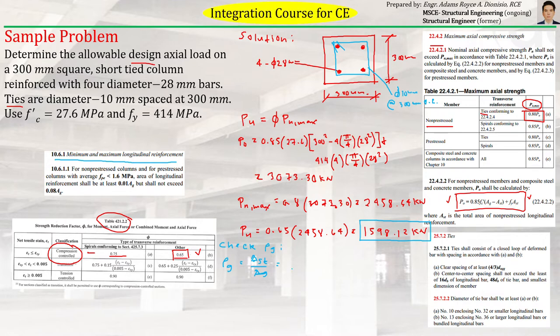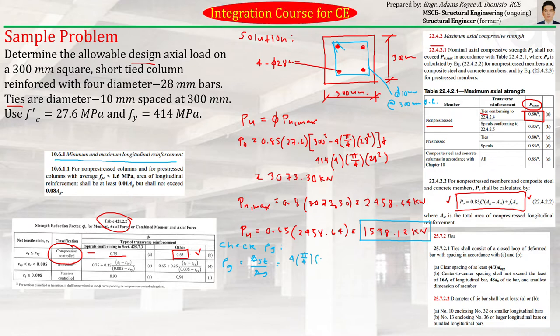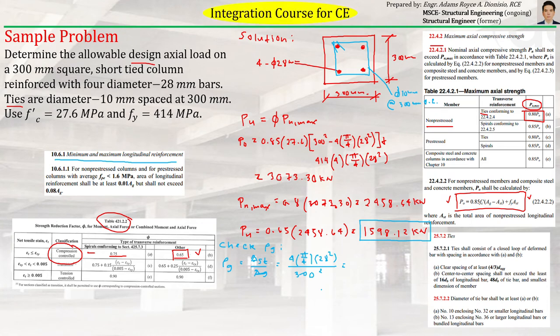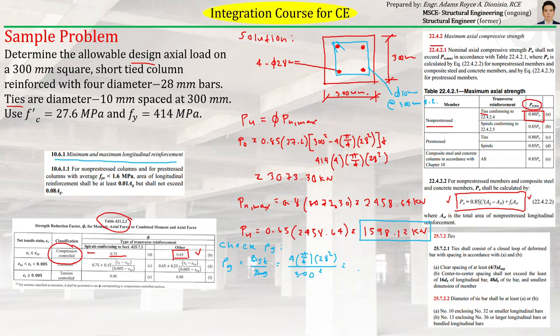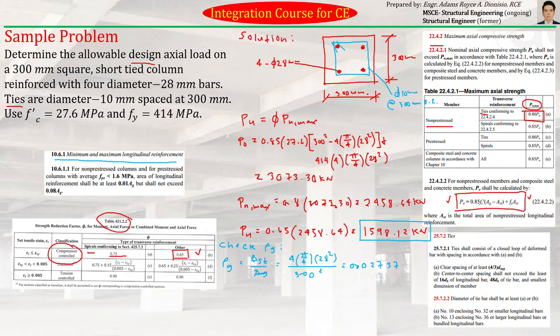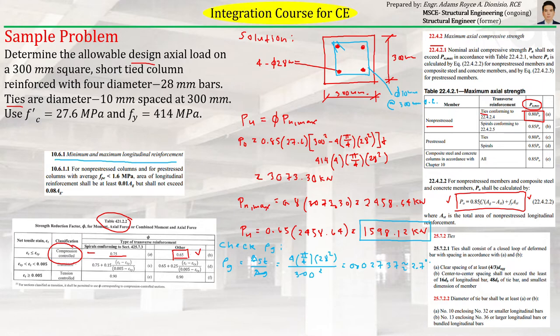If we will try to check row G, row G is just equal to AST divided by AG. So our AST is 4 times pi over 4 times 28 squared divided by AG of 300 squared. So that will be equal to 4 times pi over 4 times 28 squared divided by 300 squared. So that will be equal to 0.02737, 5 decimals. Or approximately, that is 2.7 percent of AG.